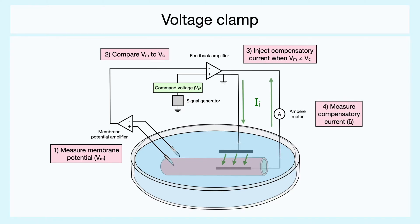And whenever it is different, current is either sent or withdrawn. The current that goes into the system can then be measured with an ampere meter.